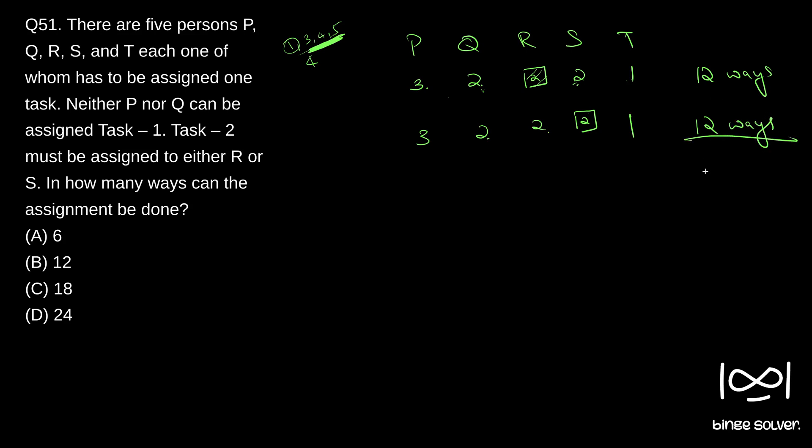So total number of ways will be 24. Total number of ways we can do this, satisfying the criterion that task 2 goes to either R or S and task 1 doesn't go to P or Q, is 24 ways. So solution to question 51 is D, 24.